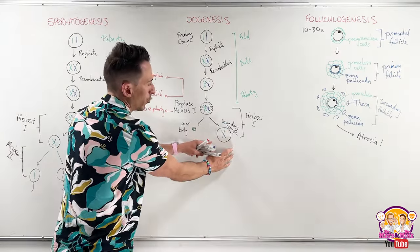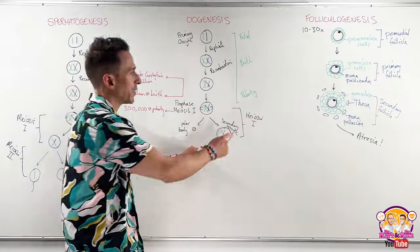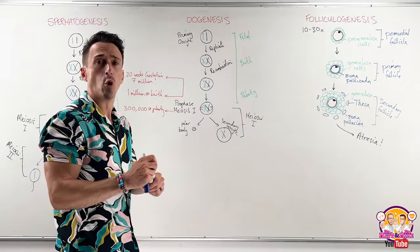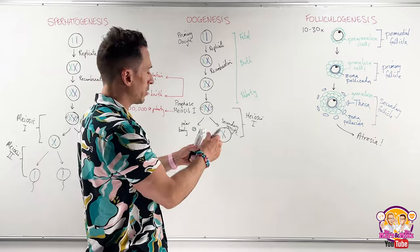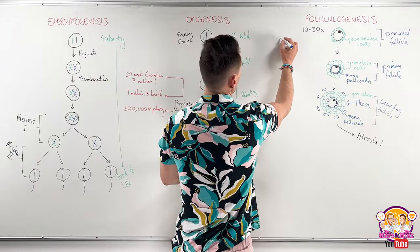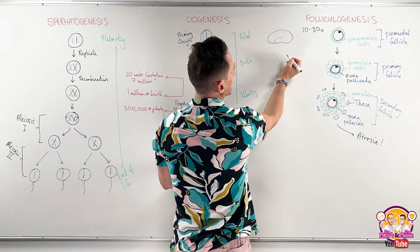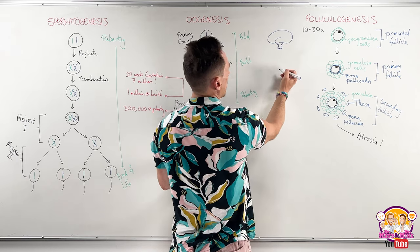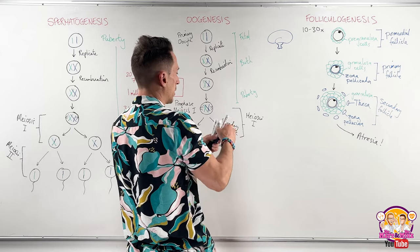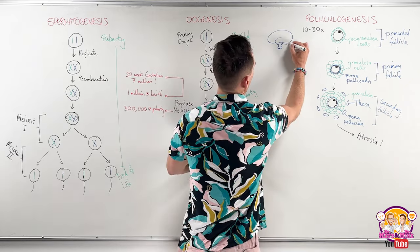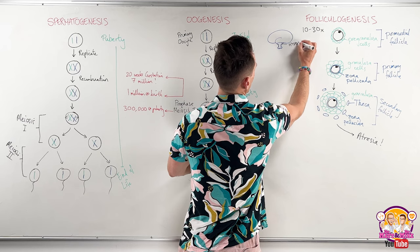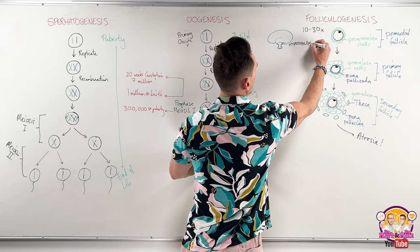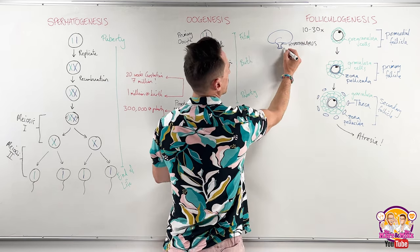It's important not to mix up follicle stages with oocyte stages — the primary oocyte is present from primordial through to secondary follicle. What is it about puberty that stimulates this process? When puberty hits, certain hormones are released. You have the hypothalamus at the base of the brain, and underneath it the pituitary gland — specifically the anterior pituitary.